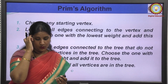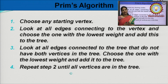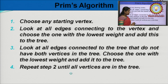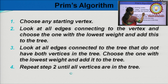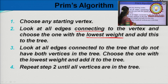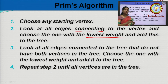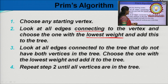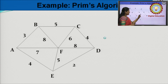Next, Prim's algorithm. In Prim's algorithm, always select the connected edge to the tree. First, we choose the starting vertex, look at all the edges connecting to the vertex, and choose the one with the lowest weight. Then select the connected edge, and repeat this process until all the vertices are in the tree. This is a graph — find the minimum spanning tree of the given graph using Prim's algorithm.